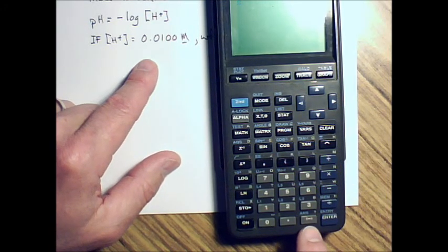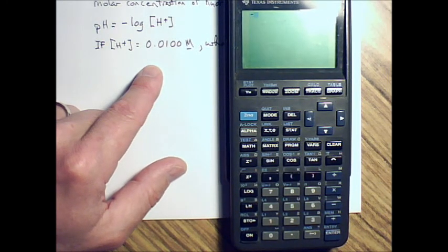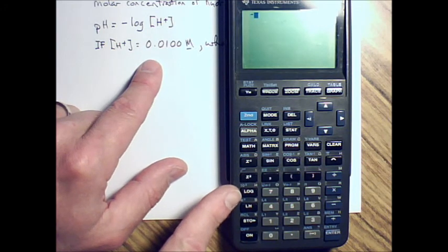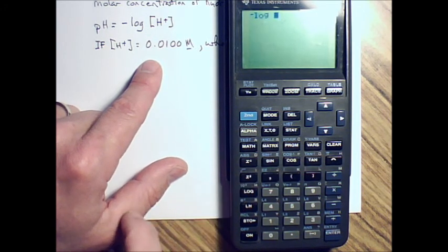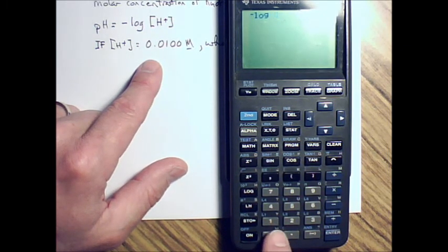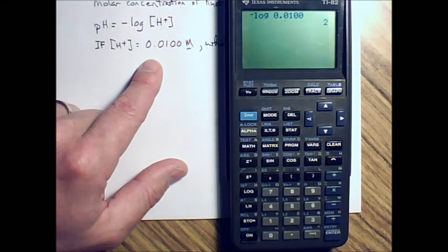You need to start with the change of sign button. So I'm going to put in the change of sign, and I can see a negative already up here on the screen. There's my log button right there. It says L-O-G. The log, then I'm putting in 0.0100. I want to hit enter, and I've got a number up there for an answer.